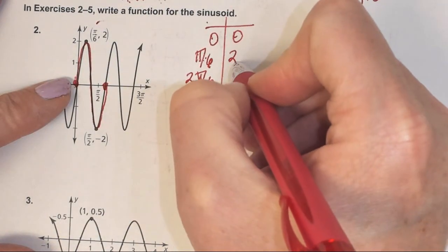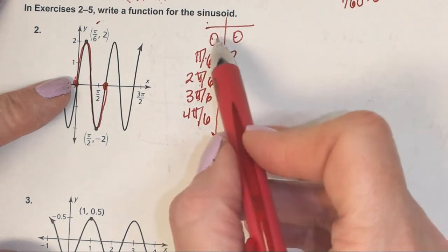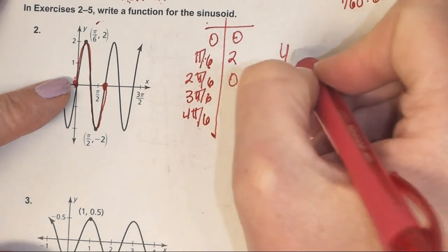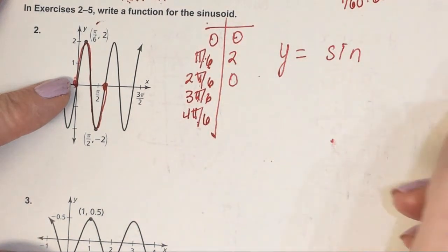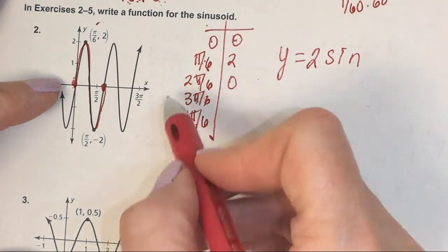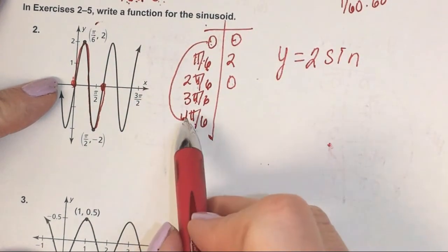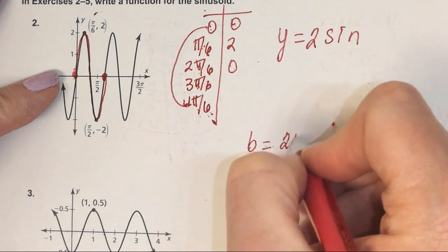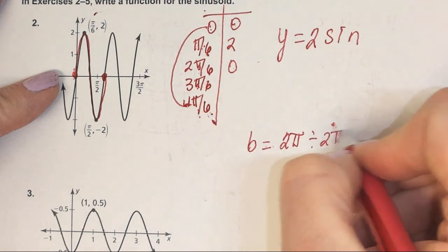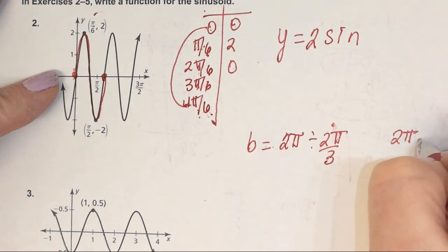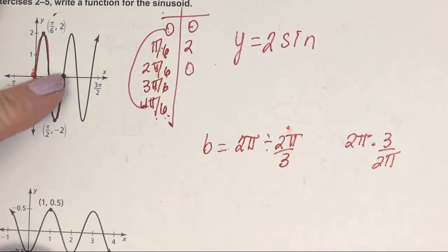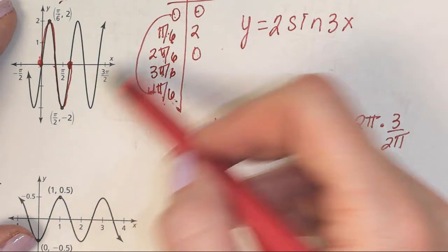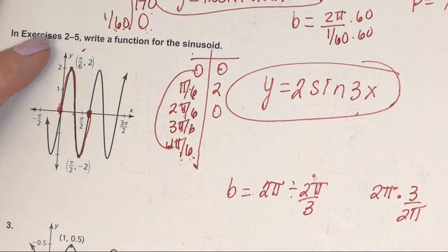This y value is 0, this one's 2. Once I see this is 0, I know that's 0. Is it sine or cosine? Sine. What's going in front of sine? A 2. Here's my period, from here to here, distance of 4π/6, which reduces to 2π/3. B is 2π divided by that period of 2π/3, or 2π times 3 over 2π. The B value is 3. So y = 2sin(3x).